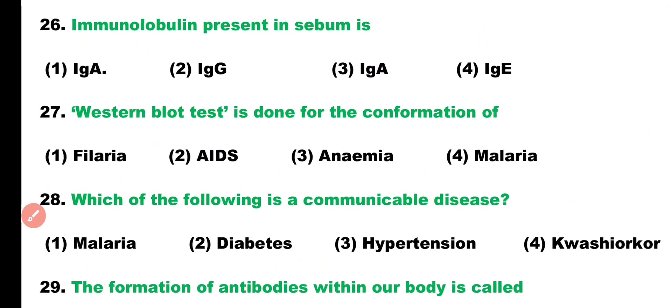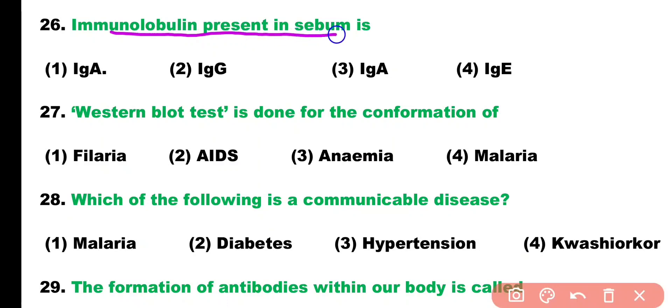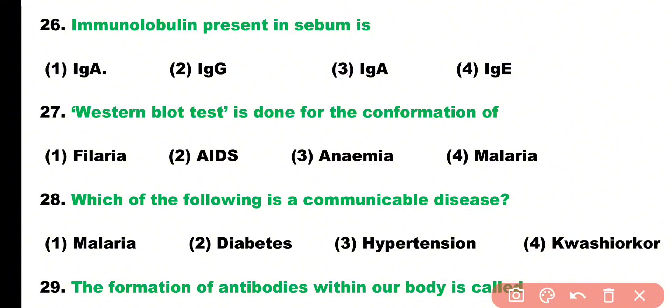Question number twenty-six: which immunoglobulin is present in sebum? Options: IgA, IgG, IgA, or IgE. IgA is an antibody or immunoglobulin that is present in the secretion of sebaceous glands in sebum.